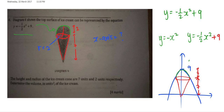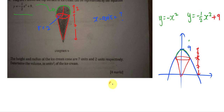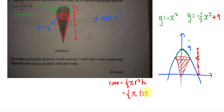The volume of the cone is straightforward — we just use the cone formula: V equals one-third pi r squared h. We have all the information, so the volume of cone equals one-third times pi times two squared times seven, which gives us 28π over 3.